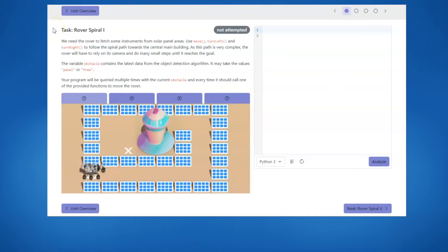For this task, we will use what we've learned about sensing and decision making while trying to navigate a robot through a maze. For sensing, we will use the obstacle variable. If it reads panel, there's something in the way. If it reads free, the path is clear.